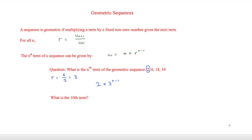We can use this nth term to find a particular term. For example, what is the 10th term? We replace n with 10, giving 2 × 3^(10-1) = 2 × 3^9 = 39,366.